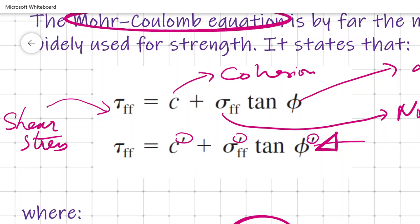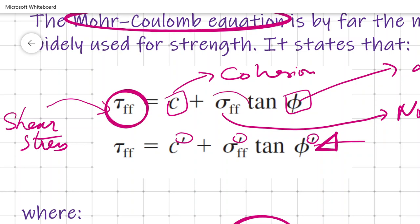Shear strength is defined as the maximum shear stress that a soil can bear without failure — or just before failure. It is the capacity of the soil to bear maximum stresses, and that maximum value of shear stress is called the shear strength. So shear strength equals cohesion plus normal stress at time of failure times tan phi, where C and phi are properties of the soil determined from tests, and sigma ff is the normal stress acting on the soil sample at the time of failure.